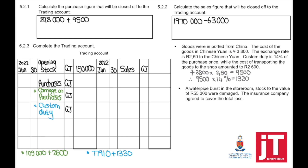The next adjustment: a water pipe burst in the storeroom — stock to the value of 55,300 was damaged. The insurance company agreed to cover the total loss. We lost trading stock due to the burst pipe. In a perpetual inventory system, trading stock would be credited with the original cost of the stock lost. But in a periodic inventory system, we do not have a trading stock account — it is replaced by the purchases account, which means the purchases account must be minus 55,300.